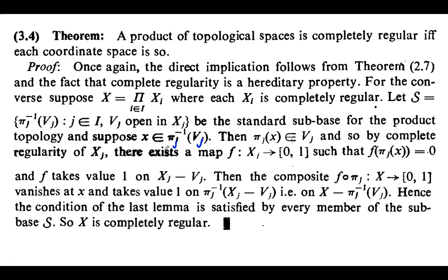Let us take an arbitrary element of this subbase, say πj⁻¹(Vj), and a point x from πj⁻¹(Vj). Since x ∈ πj⁻¹(Vj), we have πj(x) ∈ Vj, where Vj is an open subset of coordinate space Xj and πj(x) is a point of that open set. By complete regularity of Xj, there exists a map f from Xj to the unit interval such that f maps the point πj(x) to 0 and f takes value 1 outside Vj, that is, f takes value 1 on Xj \ Vj.